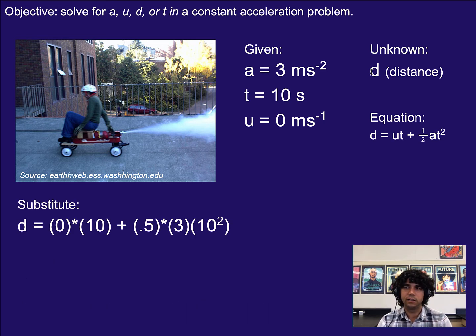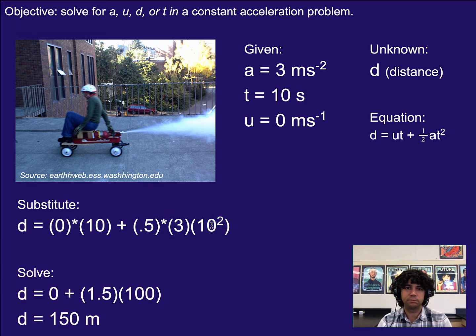So simply plug in. We have zero times 10 and we have 0.5 or one half times the 3 times 10 squared. Remember it's only the time that's squared. Simplify our equation. So here 0 times 10 gives us 0. 0.5 times 3 gives me 1.5 and 10 squared is 100. So if you're not doing this all in one step, that's an easy way to simplify it. And then you would go ahead and multiply that out to get 150 meters.